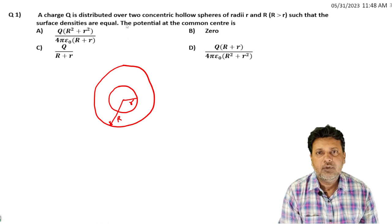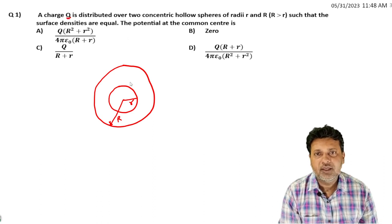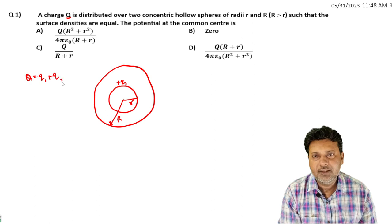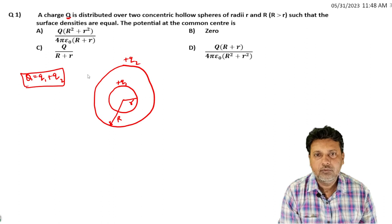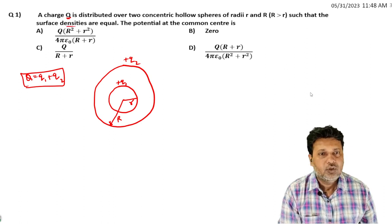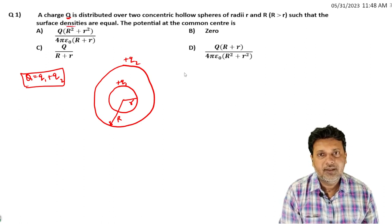Charge q is distributed between the two spheres. Let q1 be the charge on the inner sphere and q2 be the charge on the outer sphere, so that q1 + q2 = q total on both hollow spheres.